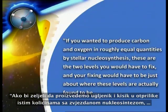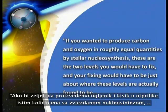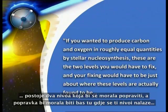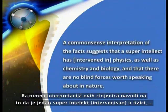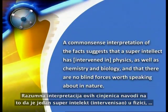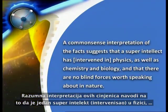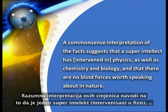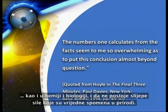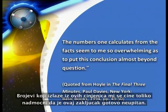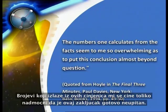'If you want to produce carbon and oxygen in roughly equal quantities by stellar nucleosynthesis, these are the two levels you would have to fix, and your fixing would have to be just about where these levels are actually found to be. A common sense interpretation of the facts suggests that a superintellect has intervened in physics as well as chemistry and biology, and that there are no blind forces worth speaking about in nature. The numbers one calculates from the facts seem to be so overwhelming as to put this conclusion almost beyond question.'